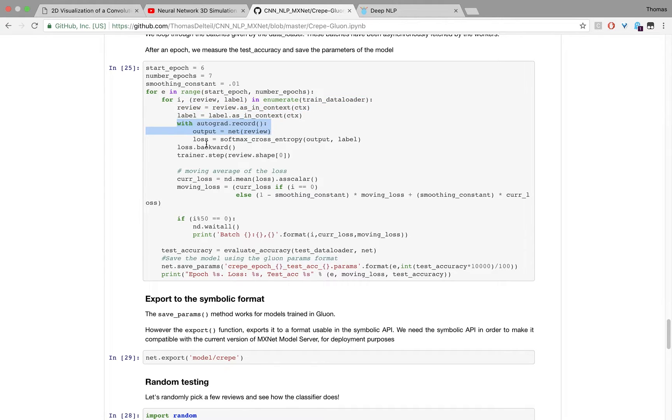Compute the output, compute the loss, send the backward propagation of the loss through the network, and then we update the weights. Basically, we do that until we reach convergence.